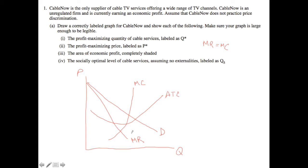Now let's think about what the profit-maximizing quantity of cable services is. We need to figure out where MR equals MC. MR equals MC right here, and so if we draw this upwards and then across, we know that this is going to be your profit-maximizing quantity. That's part A. And then we also know that this is your profit-maximizing price, because we take where MR equals MC and then go all the way up to that point on the demand curve, which is where the monopolist sets their price.